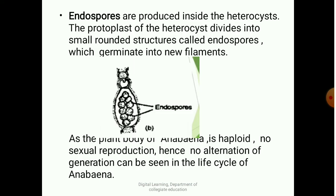Coming to the next one, endospores: endospores are produced inside the heterocysts. The protoplast of the heterocyst divides into small rounded structures, and each rounded structure is called an endospore. These endospores germinate into new filaments on return of favorable conditions.